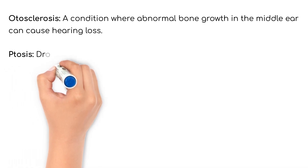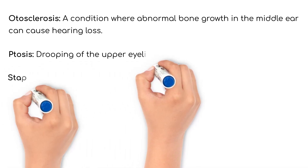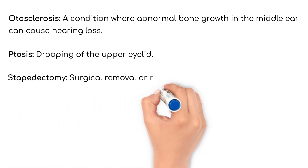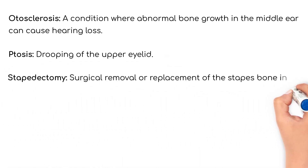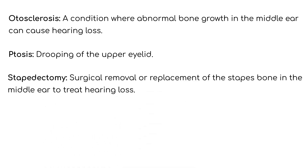Ptosis: drooping of the upper eyelid. Stapedectomy: surgical removal or replacement of the stapes bone in the middle ear to treat hearing loss.